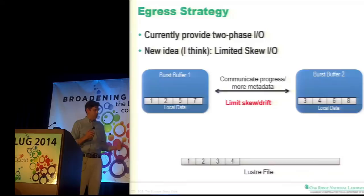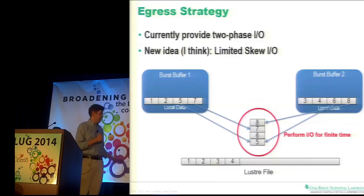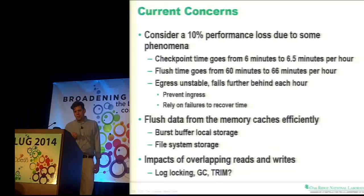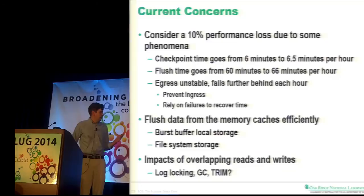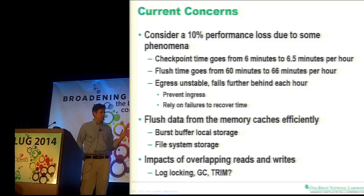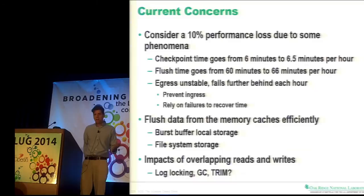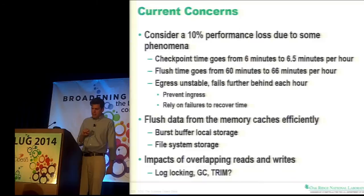Hopefully this is a way of having loosely coordinated IO that can generate high performance without high synchronization, keeping that high issue rate. When the skew drift gets too far, we exchange more metadata and start the second phase of shipping data. One chief concern: what happens if there's a 10% performance loss on the burst buffer? If we're using Flash or NVRAM with some culling process, the checkpoint time goes from six minutes to six and a half minutes — not a big deal. On the other hand, if the flush time goes from 60 minutes to 66 minutes per hour, that's an unstable queue. You have to have some mitigation strategy.